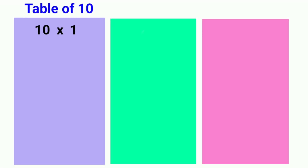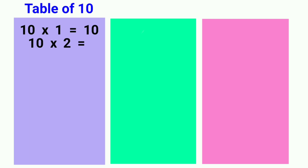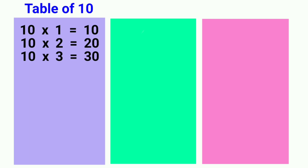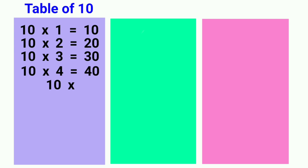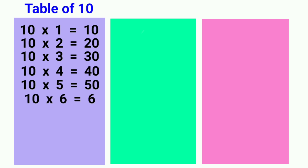10 ones are 10, 10 twos are 20, 10 threes are 30, 10 fours are 40, 10 fives are 50, 10 sixes are 60,